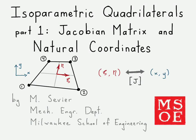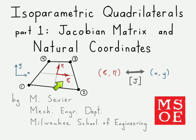This video is going to be the first of a series of videos investigating isoparametric quadrilateral elements. In this first part, we're going to investigate what natural coordinates are — that's this xi and eta drawn within the element — and what the Jacobian matrix is and how it is able to map between the element's natural coordinate system and global coordinates.